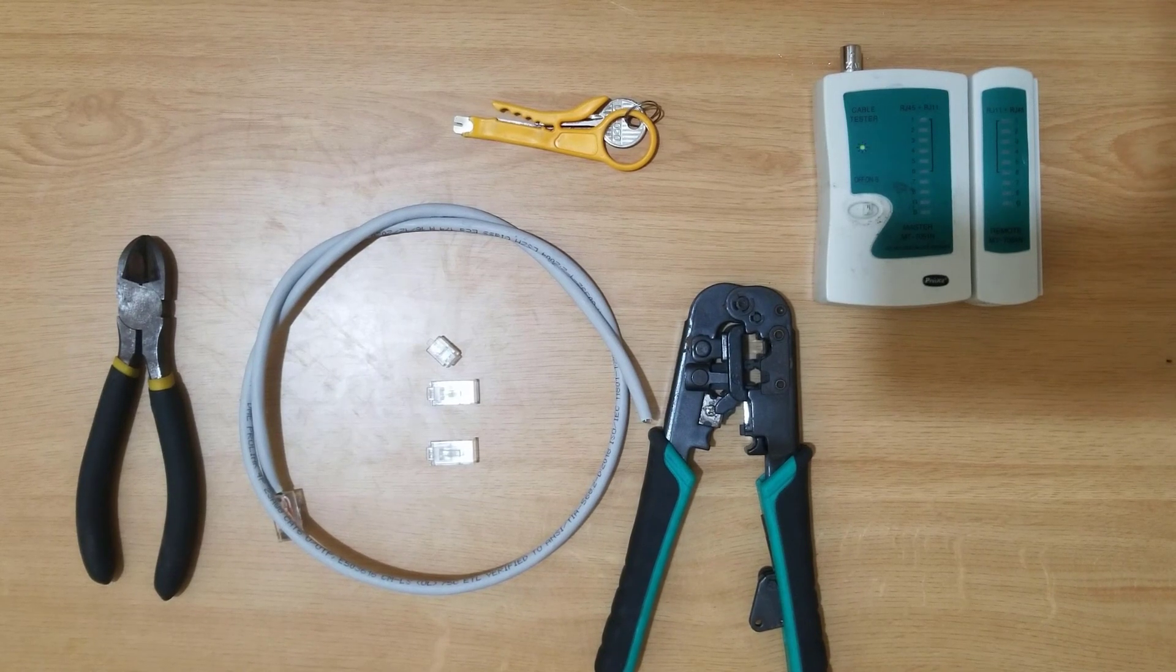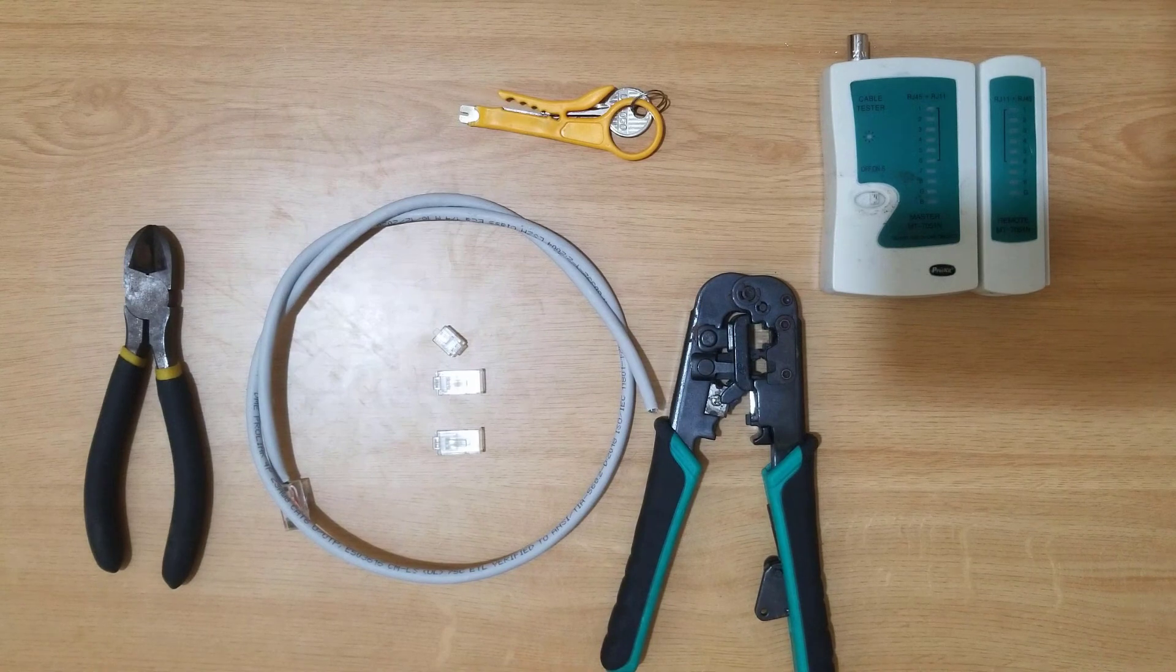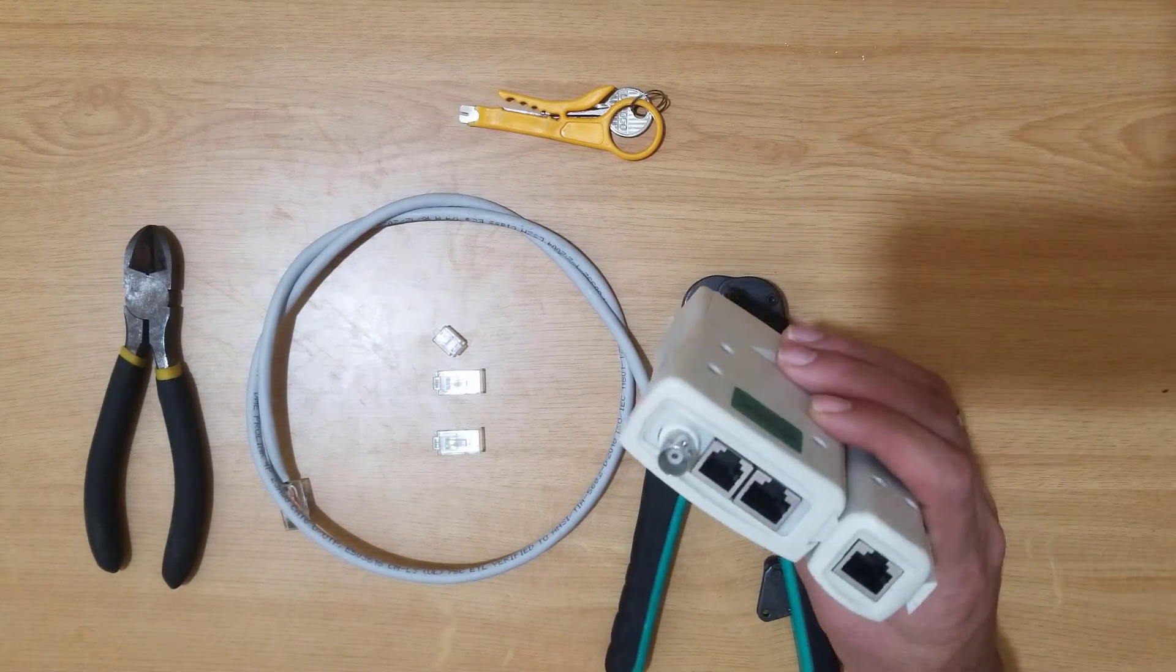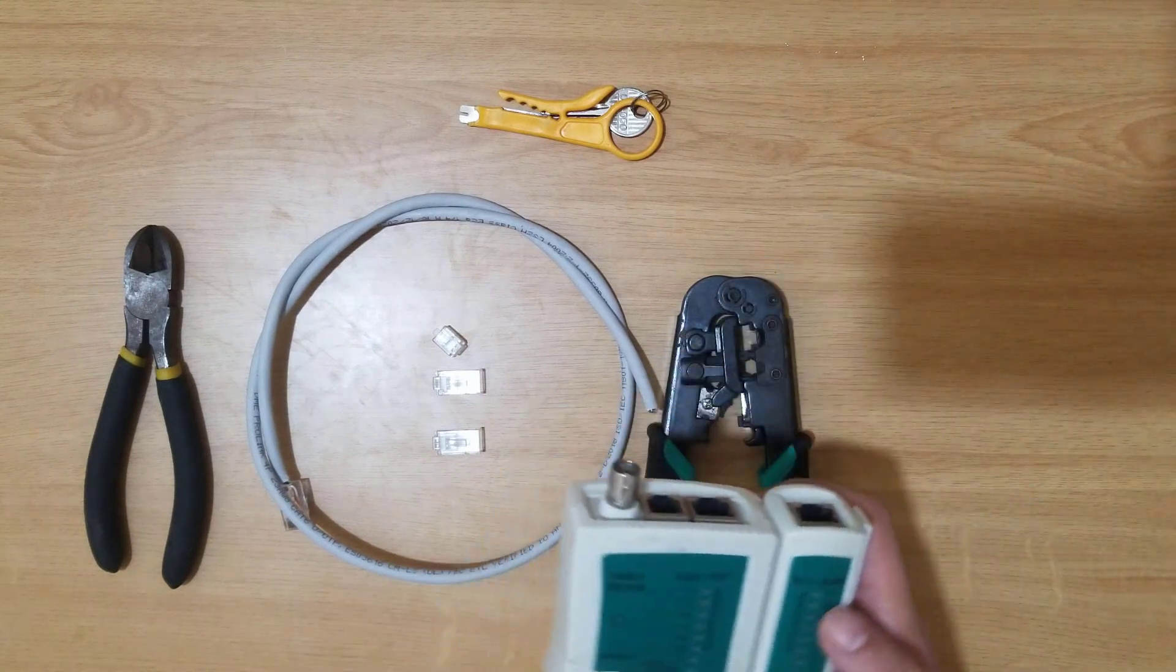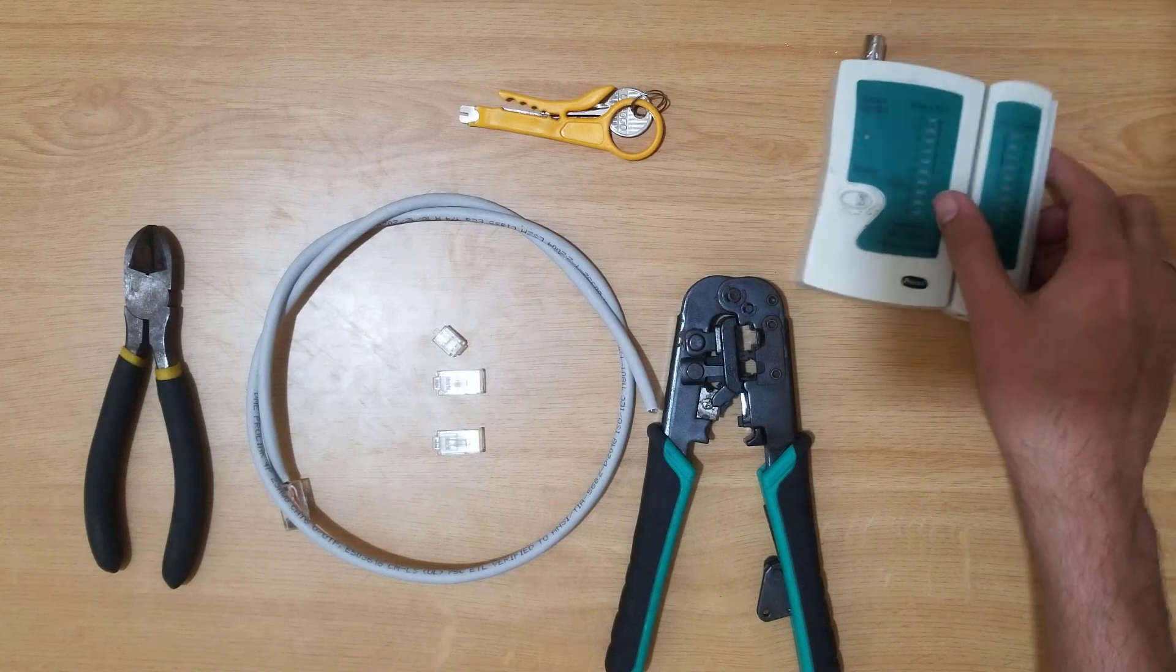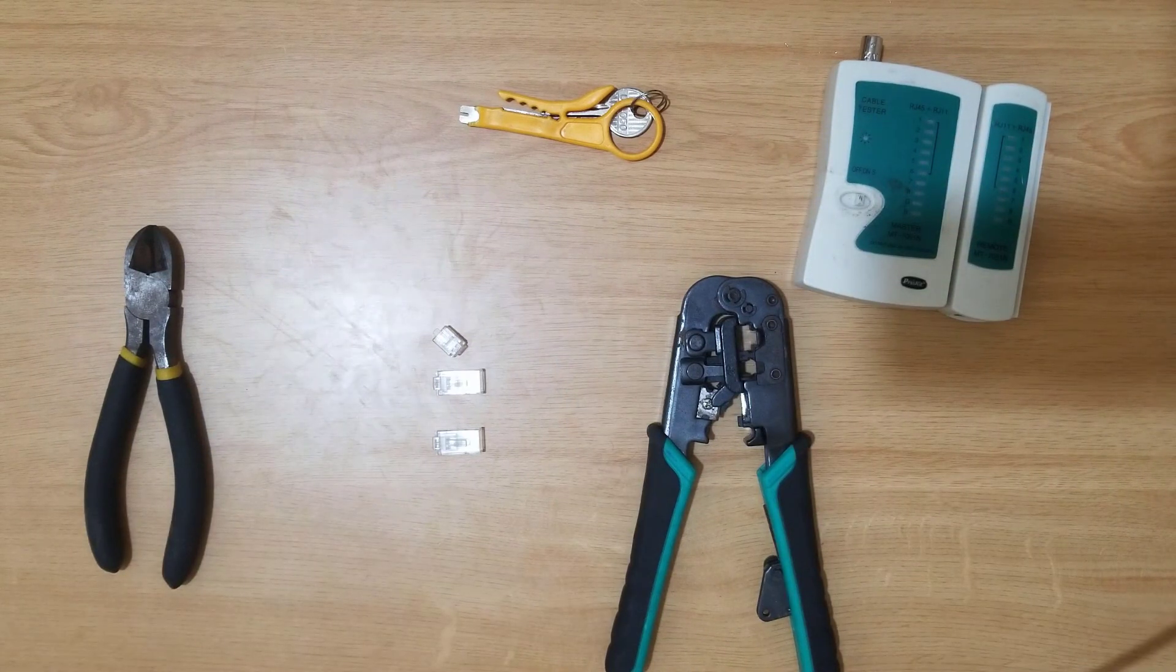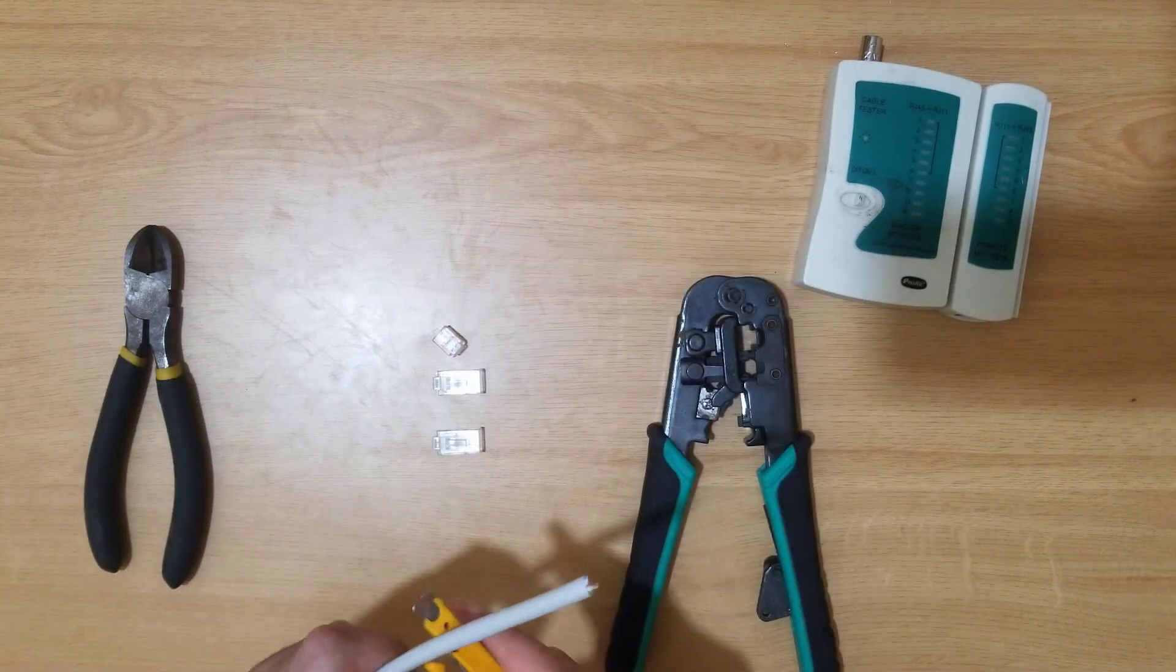In this video, we will see how to make a Cat 6 LAN cable connector. After that, we will test the cable using a LAN tester. All pairs should show the LEDs, then the cable connectors will be perfect. I'm starting here. I'll make one-sided connector first, then the second side, and then we will test the connectivity.